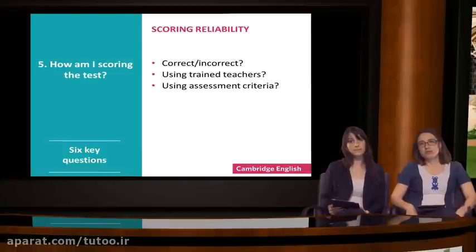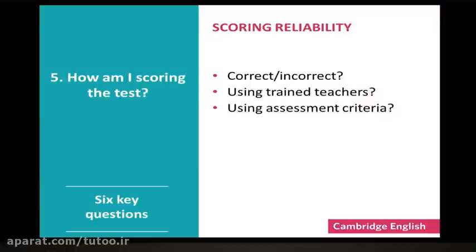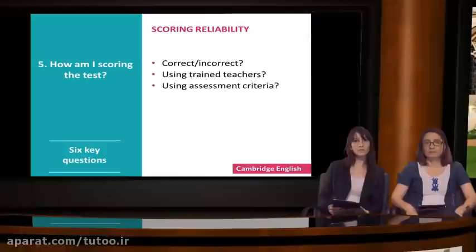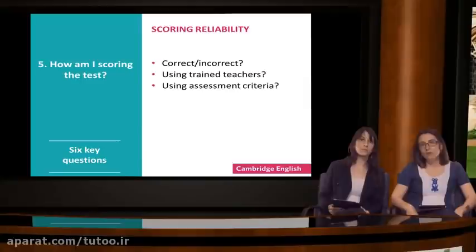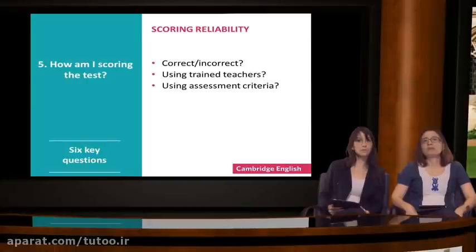Moving on to the next question, related to the scoring of the language produced in our test. The question is: how am I scoring the test? For example, are the answers going to be scored as correct or incorrect? This might be the case for a multiple choice test. Or am I going to use trained teachers to score some of the tasks? This may be the case for scoring speaking or listening. Or am I going to use specific criteria to assess the language produced - for example, grammar, vocabulary, pronunciation, essay organisation in writing and so on. These are all questions that relate to reliability - how dependable the scores from the test are. How can we make sure that the scores reflect the learner's actual ability and not whether the examiner happened to be in a bad mood that day?